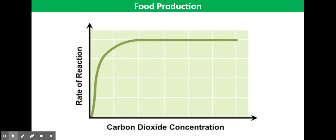You need to understand the effects on crop yield of increased carbon dioxide and increased temperature in glass houses. As glass houses are enclosed, carbon dioxide concentration can be really tightly controlled. Farmers can burn paraffin lamps to increase carbon dioxide levels within the glass house. As the concentration of carbon dioxide increases, the rate of photosynthesis will also increase, since carbon dioxide is a reactant in photosynthesis. However, as the concentration of carbon dioxide increases beyond a certain point, the rate of photosynthesis will plateau, as you can see on the graph, because another factor will be limiting the rate of photosynthesis.